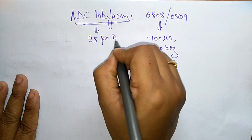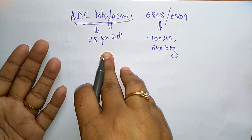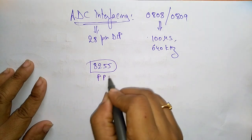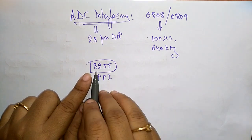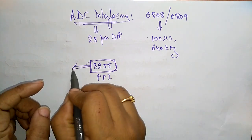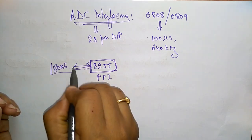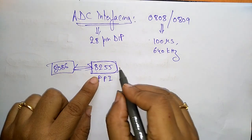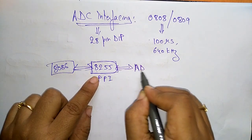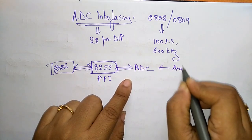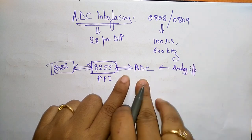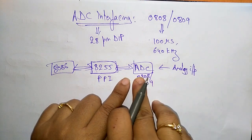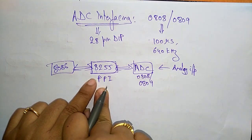This ADC pin will be connected to 8255, which is a programmable peripheral interface. All peripheral devices, meaning external devices, are connected to 8255, which acts as an interfacing circuit from the microprocessor. The 8086 microprocessor is connected to this programmable peripheral interface. The analog input is given to the ADC, which is 0808 or 0809, and then the ADC is connected to the programmable peripheral interface.